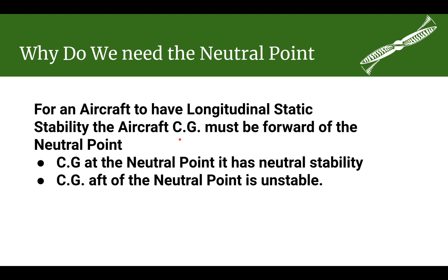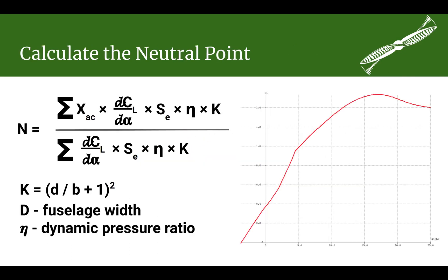That's why it's important to know where our neutral point is. Now we get into some math — but even though it looks intimidating, it's very simple, especially since we've only got two horizontal flying surfaces. This sigma symbol means you're going to sum up some terms — for every flying surface, you do this calculation and sum the results. The same is done for the denominator. Once you have those two sums, you just divide them, and that gives you your neutral point.